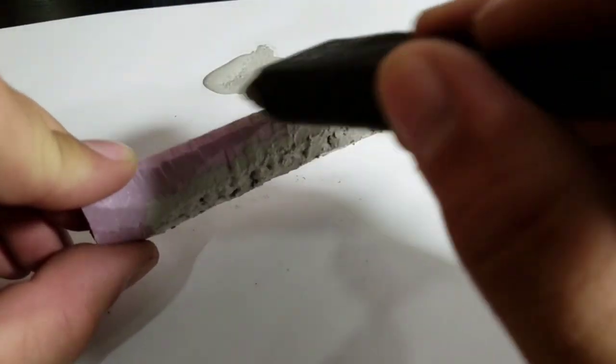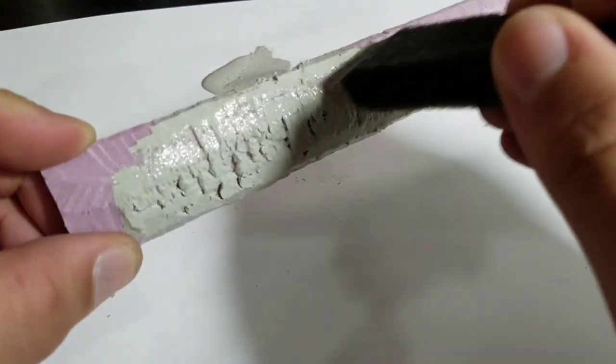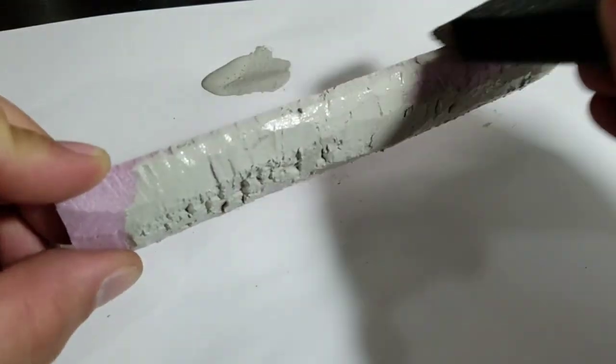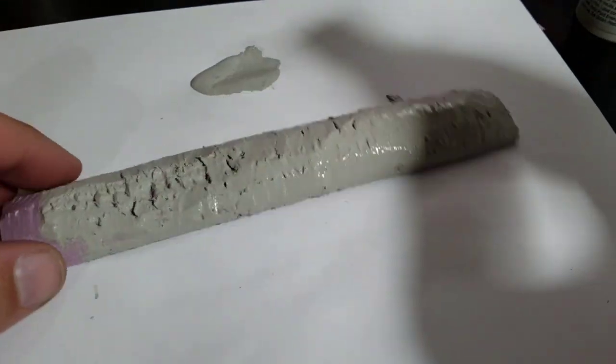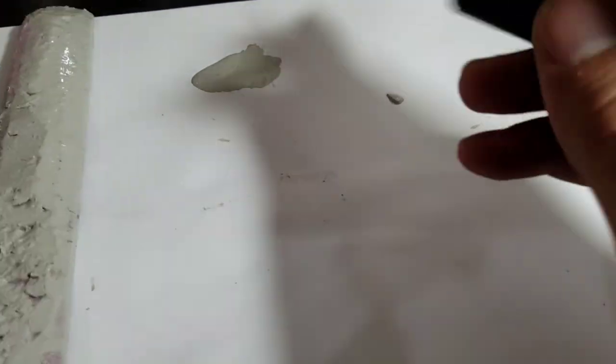Now that the foam has been shaped and test fitted, it's time for paint. Try and pick a base color that will complement the color load you will be applying. This will save you material as you won't be fighting to hide the pink colored foam.